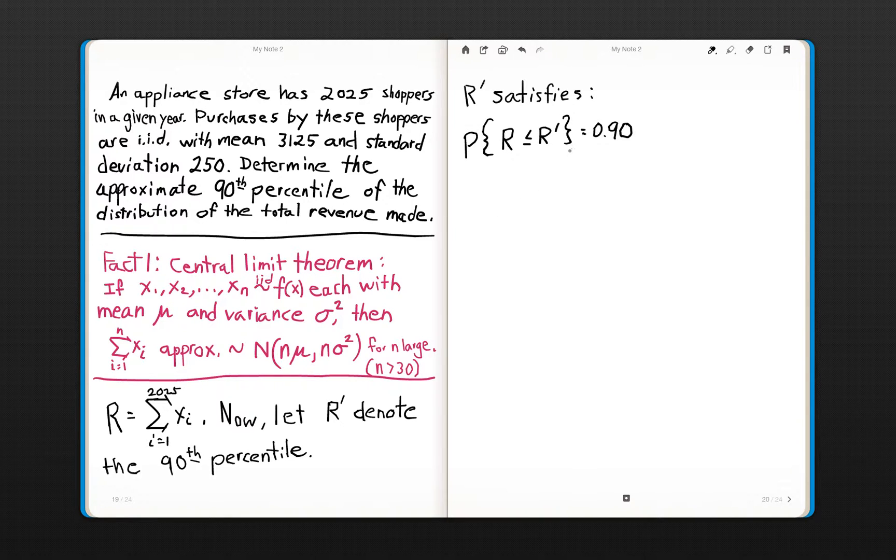Since R' is the 90th percentile, the probability that our random variable R is less than or equal to this R', which we're trying to determine, should equal 0.9. This is the quantity that we need to find.